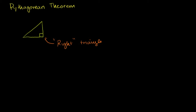Then the relationship between their sides is this: if this side is a, this side is b, and this side is c — and remember, the c we're dealing with here is the side opposite the 90 degree angle. It's important to keep track of which side is which. The Pythagorean Theorem tells us that if and only if this is a right triangle, then a squared plus b squared is equal to c squared.